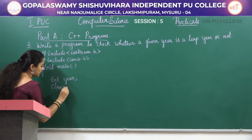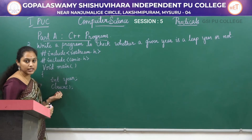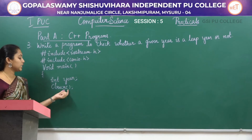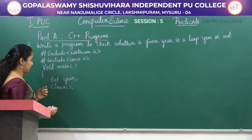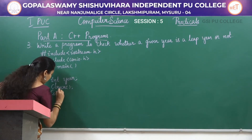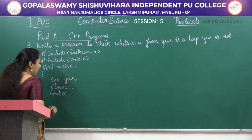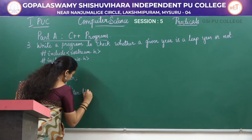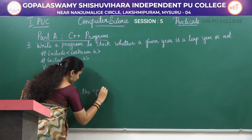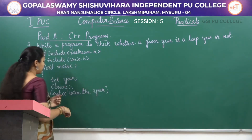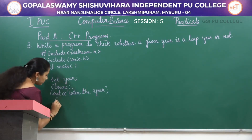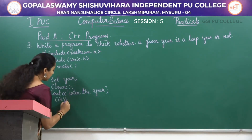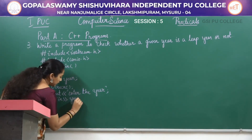We use the clrscr function to clear the previously generated output on the display screen. Next, using the cout statement, I am going to print 'enter the year'. This is the extraction symbol, and using the cin statement, I am going to enter the year.